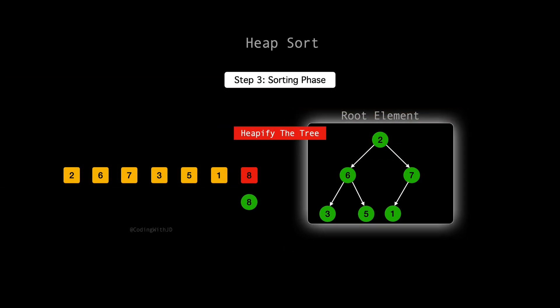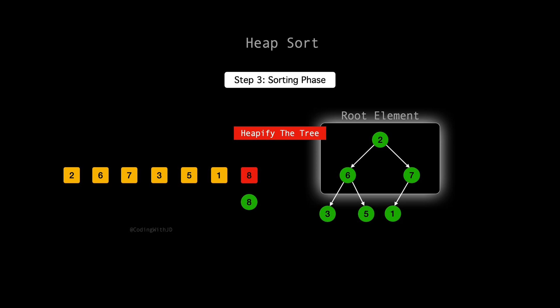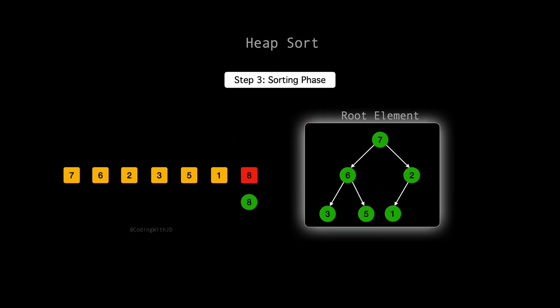Heapifying starts from the root. We compare 2 with its children, 6 and 7. The larger of the two children, 7 should become the new root to maintain the max heap condition. After swapping 2 and 7, our tree partially resembles a max heap, but we're not done. 2 is now under 7, and we need to ensure it doesn't violate the heap structure further down. Since 2 only has one child, which is 1, we compare these two. 2 is already larger than 1, so no further swaps are needed at this level. The heap property is maintained here.